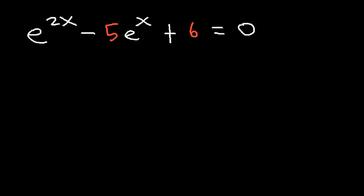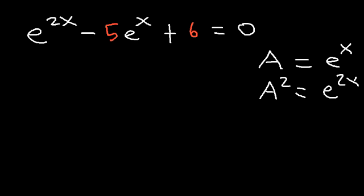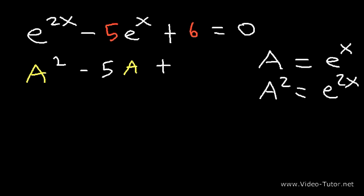We're going to factor the equation using substitution. Let's pick a letter — we'll use a. We're going to say a is equal to e to the x. If that's the case, then a squared is e to the 2x. So what we now have is a squared minus 5 times a plus 6 is equal to 0.